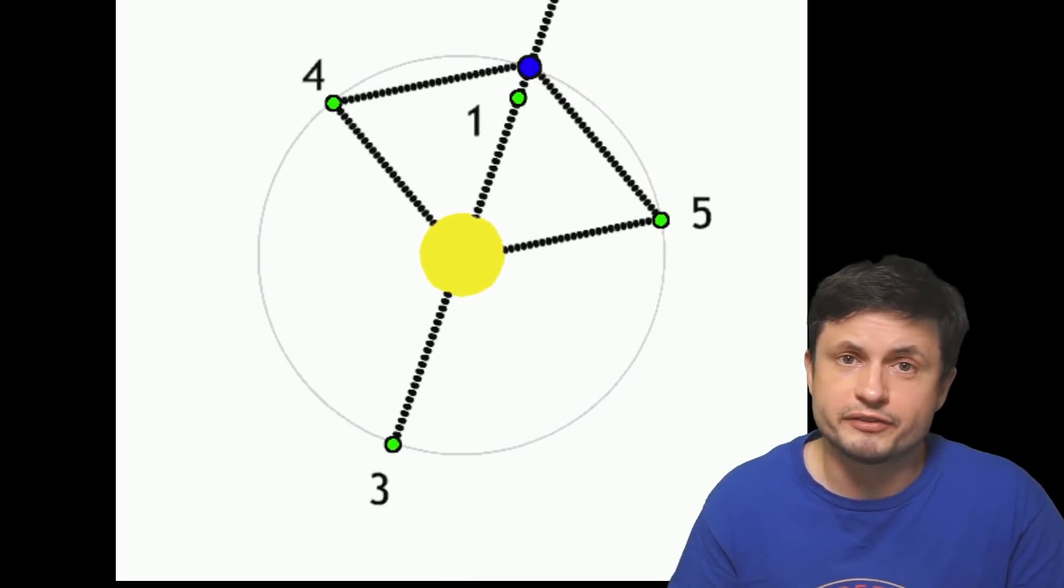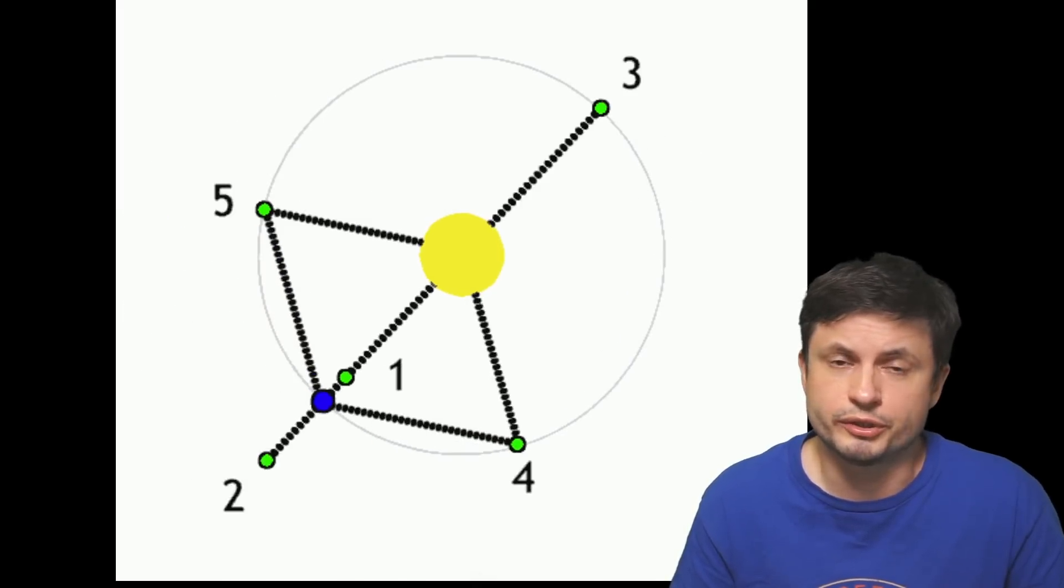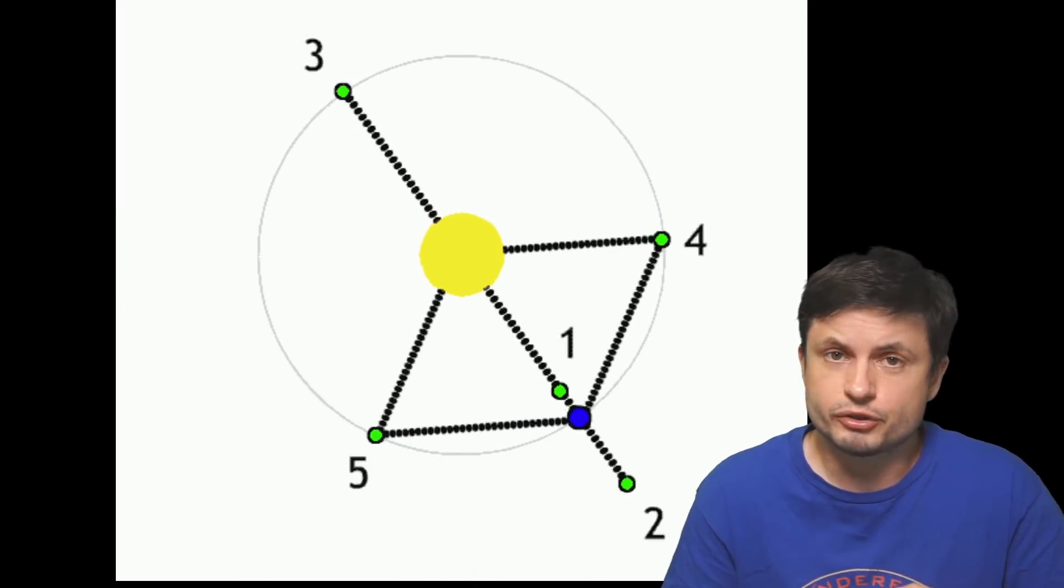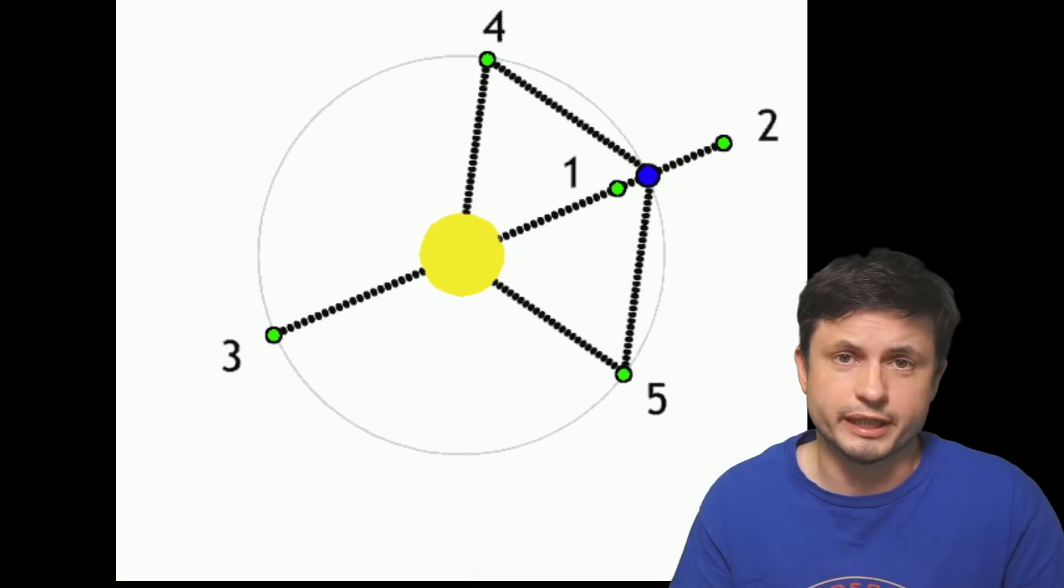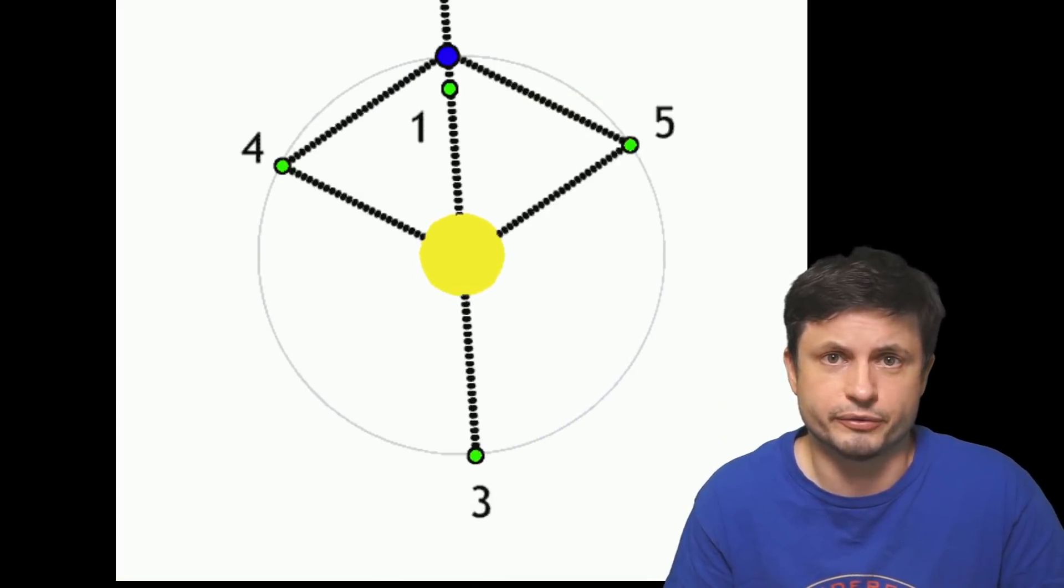And as you can see from this image, there are five such points where you can technically place any object, for example, an asteroid or even a space probe, and it's going to stay in this region for a pretty long time. These are really stable points, and they've been used for scientific purposes for many decades now.